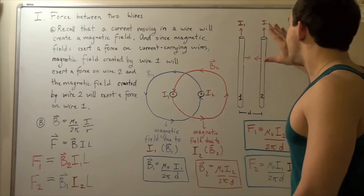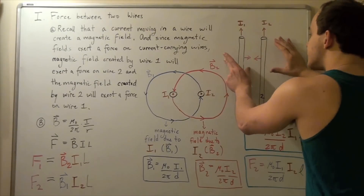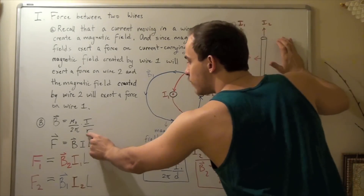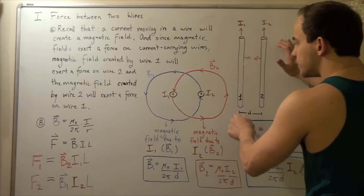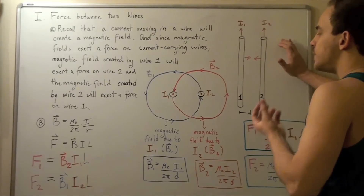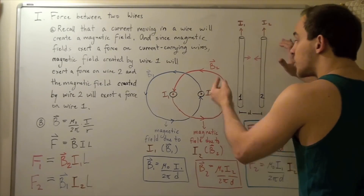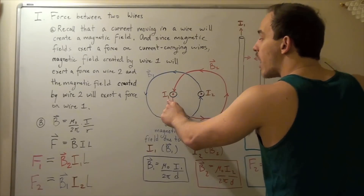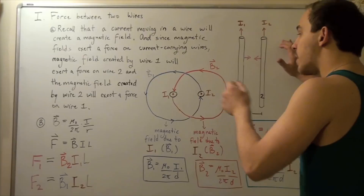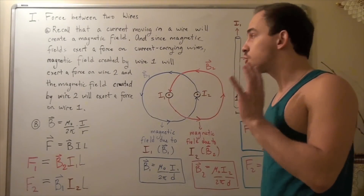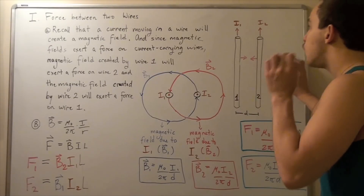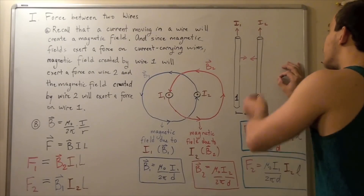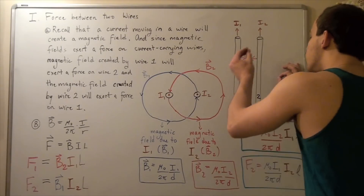The distance R in the formula corresponds to our separation D between the wires. The red line touching wire 1 represents the magnetic field B2 created by the current I2 in wire 2. The blue line touching wire 2 represents the magnetic field B1 created by the current I1 in wire 1. We want to find the force that wire 1 feels due to the magnetic field of wire 2, and the force that wire 2 feels due to the magnetic field of wire 1.